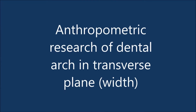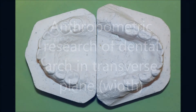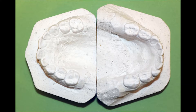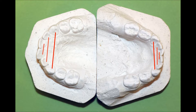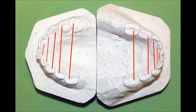Anthropometric research of dental arch in transverse plane — width. In primary dentition, Dolga Polova proposed to measure width of the dental arches between central and lateral incisors, canines, and the first and second primary molars. Measuring points on primary incisors and canines are located on their palatal cusps on the lingual surface, and on primary molars in the mesial fissure at the intersection of longitudinal and transverse grooves. The obtained data is compared with the average values.